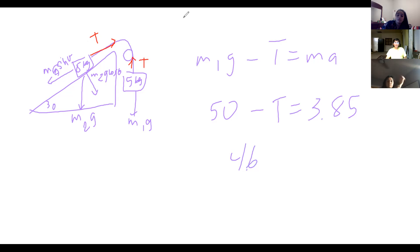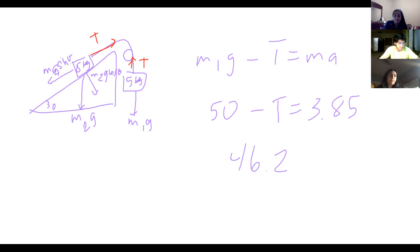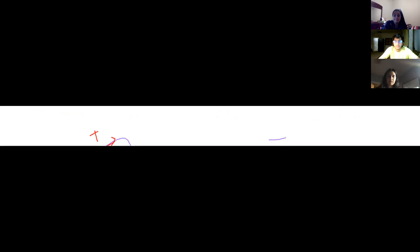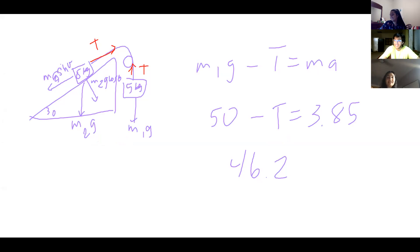How specific are you on sig figs on the test? I normally use the least number of significant figures given in the problem. So if the smallest number has one sig fig like 9000, I'll do one or two sig figs. If the coefficient of friction is 0.050, I'll round to the third decimal place. Usually two sig figs feels right.